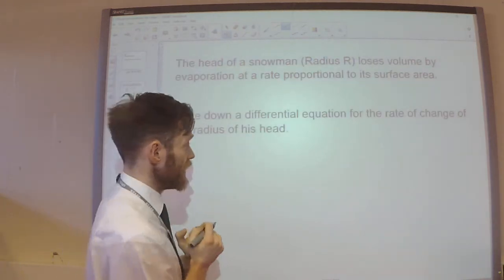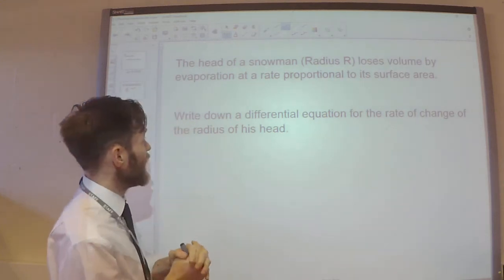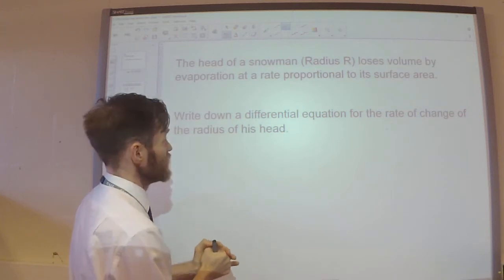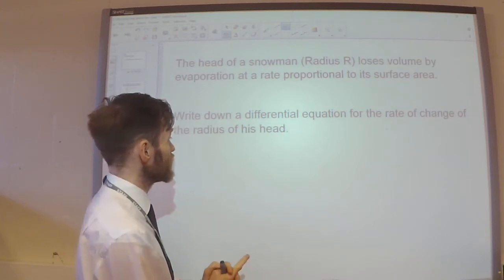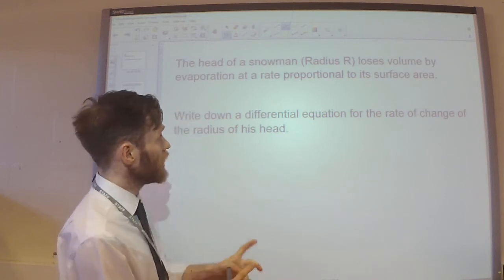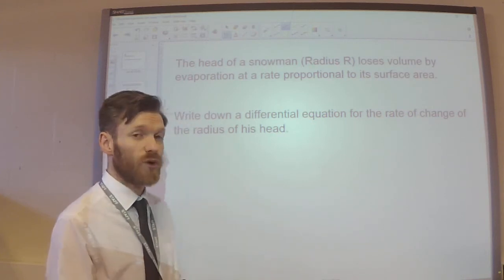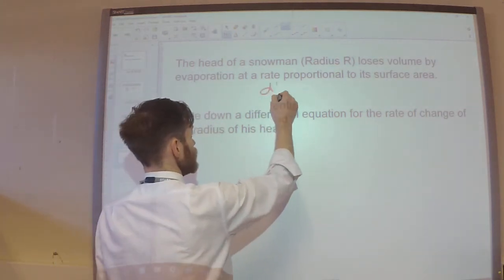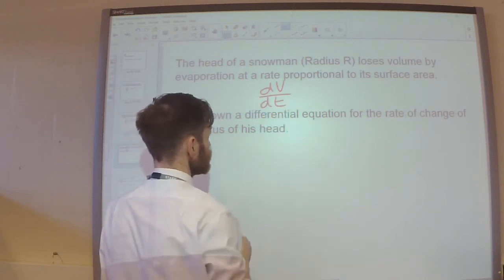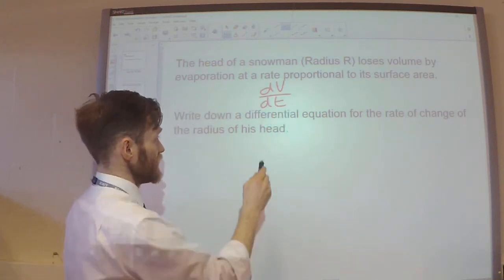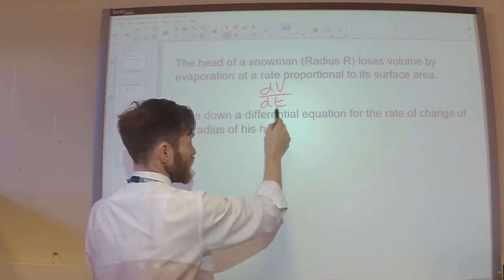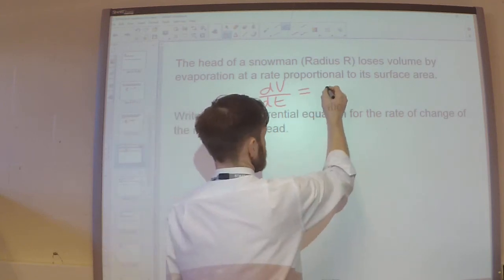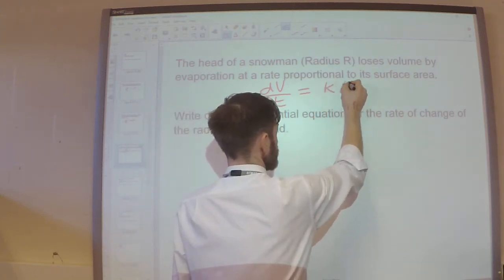Getting a little bit harder. So, it says, the head of a snowman, radius r, loses volume by evaporation at a rate that's proportional to its surface area. So, it's losing volume at a rate proportional to its surface area. I'm thinking that dv by dt, so this is the volume, the rate of change of the volume, and that's proportional to the surface area. So, k times A.